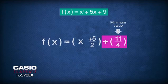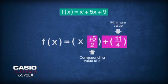which is positive 11 over 4, while its corresponding value of x is the negative of the number in the big squared bracket, which would be negative 5 over 2.